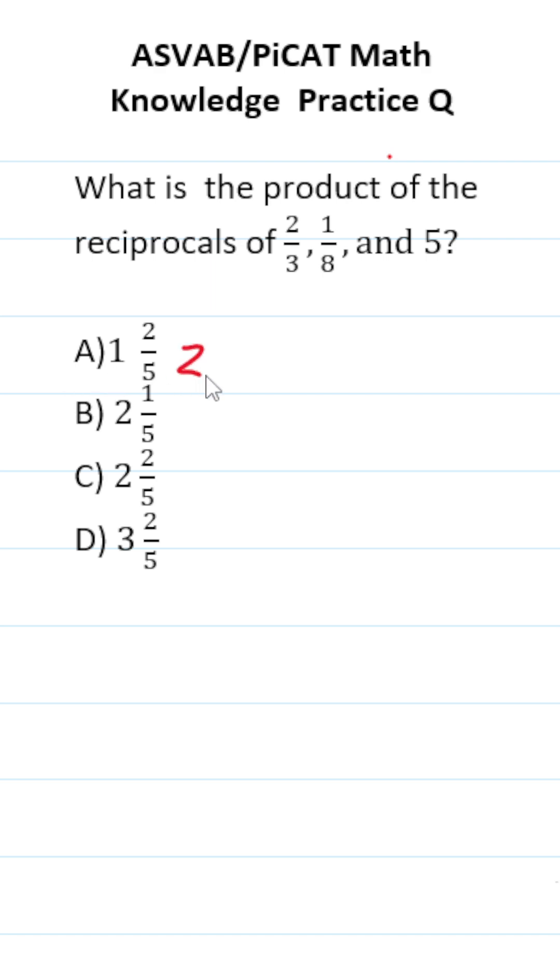So let's get started by finding the reciprocal of 2 thirds. To find the reciprocal of a fraction, you just exchange your numerator and denominator. In other words, the reciprocal of 2 thirds is going to be 3 over 2.